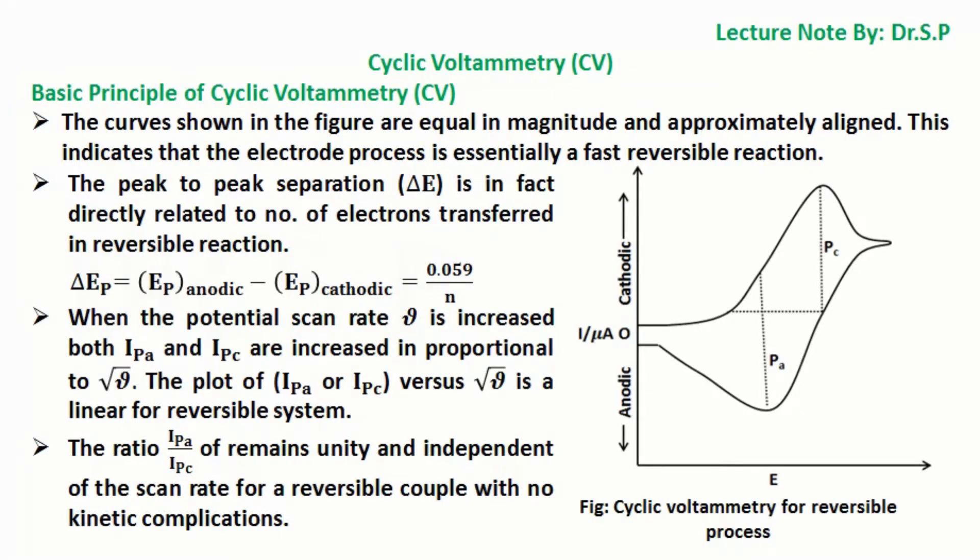When the potential scan rate nu is increased, both IPA and IPC are increased in proportion to square root of nu. The plot of IPA or IPC versus square root of nu is linear for a reversible system.